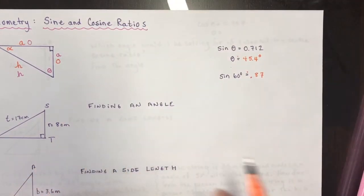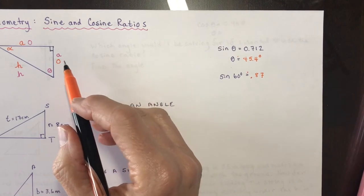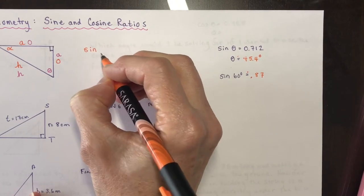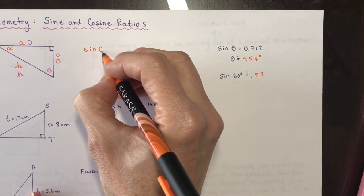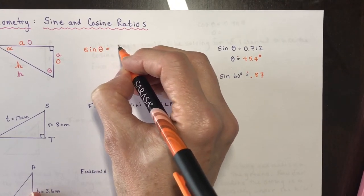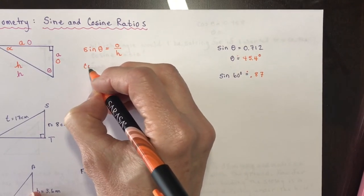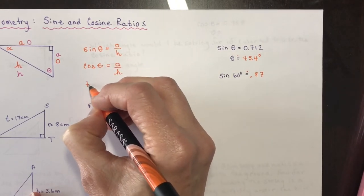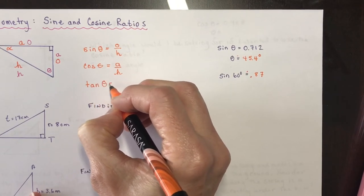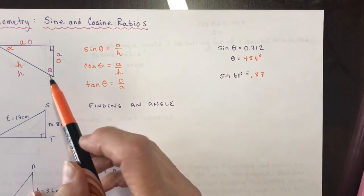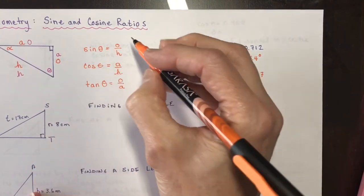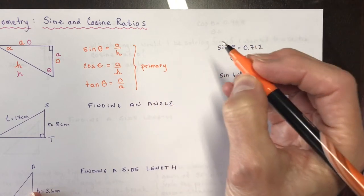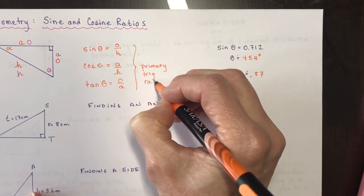The three primary trigonometric ratios are: sine of theta equals opposite over hypotenuse, cosine of theta equals adjacent over hypotenuse, and tangent of theta equals opposite over adjacent — this is your SOH-CAH-TOA rule. Remember, these only work when you have a right-angled triangle, which is what we'll be focusing on for the next couple of lessons.